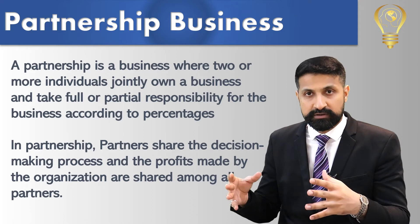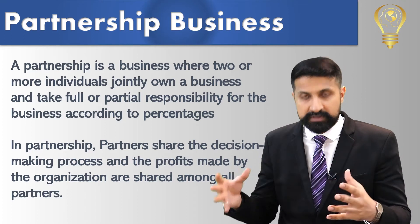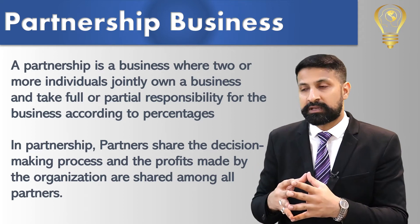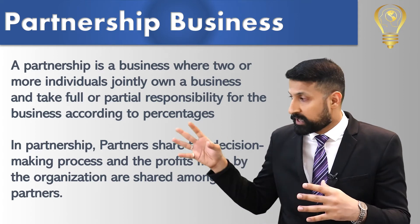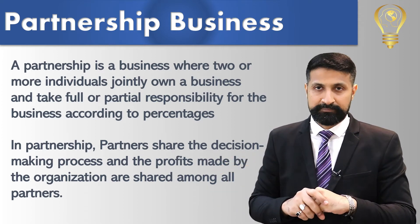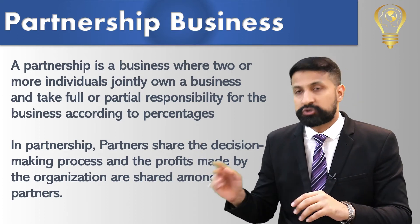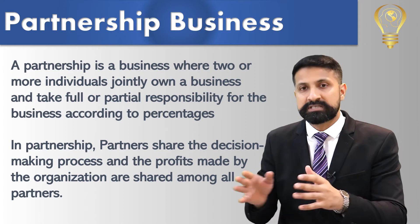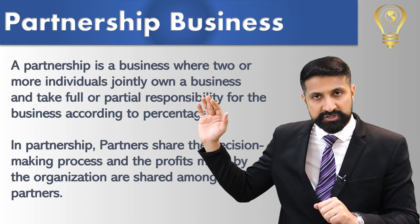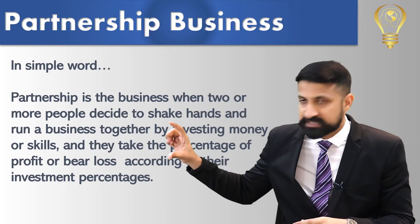Partnership business کے اندر decision making سارے partners مل کے کرتے ہیں — دو ہوں، تین ہوں، چار ہوں، انیس ہوں — یہ سارے مل کے decision making کریں گے۔ اور جو profit آئے گا وہ ان کی percentage کے حساب سے آپس میں divide ہو جاتا ہے۔ مثال کے طور پر کسی کا 50% share ہے، کسی کا 2% share ہے — اسی حساب سے ان کو ان کا percentage ملے گا۔